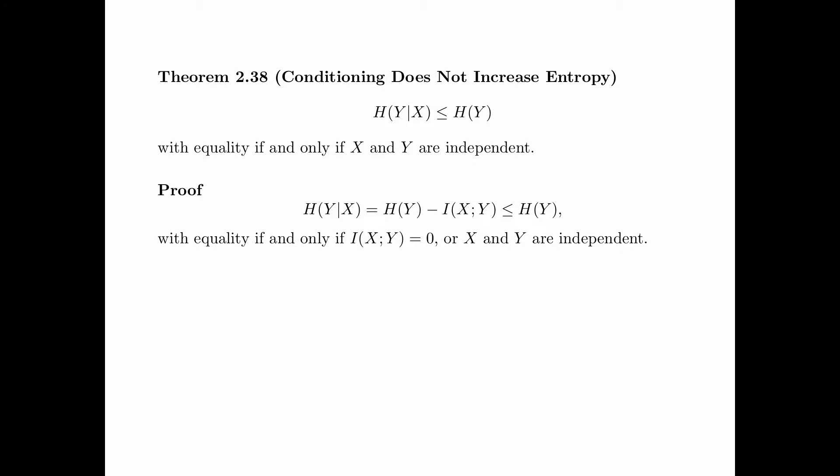The proof is very simple. Consider entropy of Y given X equals entropy of Y minus mutual information of X and Y, which is less than or equal to entropy of Y, because the mutual information between X and Y is always greater than or equal to 0. Equality holds if and only if the mutual information between X and Y is equal to 0, or X and Y are independent.